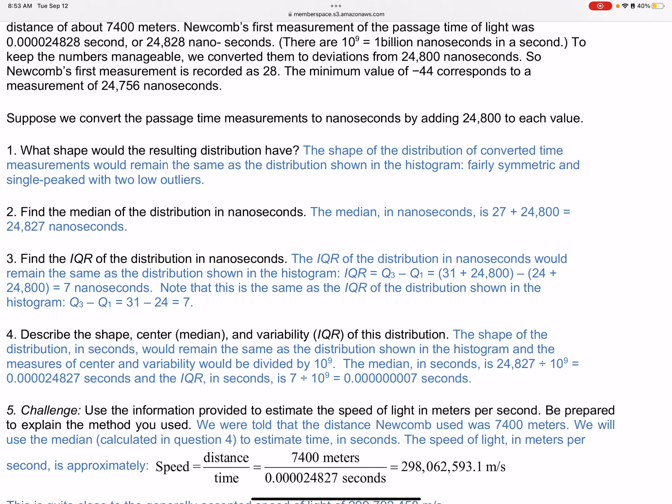You can look at these. Remember CUSS and BS: center which is the median, unusual features, gaps and outliers. S is shape, which is, is it unimodal symmetric, unimodal skewed right, skewed left, or is it bimodal? And then spread is the range, the IQR, and the standard deviation, other ways to talk about range.